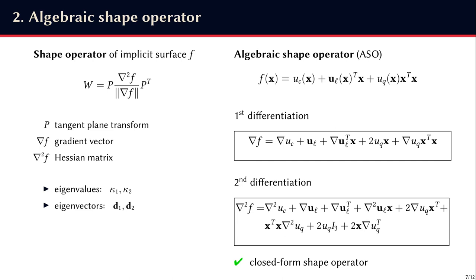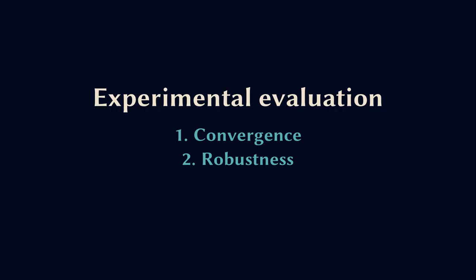So to compute what we call the algebraic shape operator, we consider the fitted scalar field F, where each parameter depends on the spatial position x. Then we simply differentiate twice F to obtain the gradient and the Hessian matrix of the fitted sphere. And finally, we obtain a closed form expression for the shape operator with a constant memory footprint, and that requires only one loop over the neighbors to be computed.